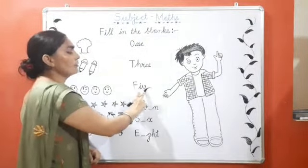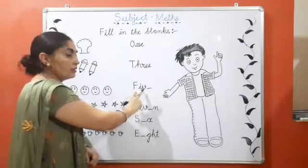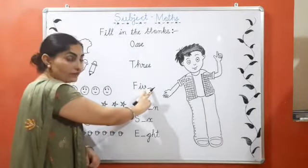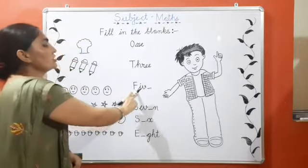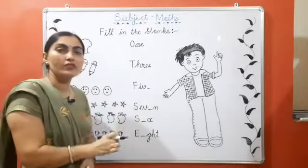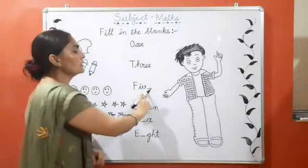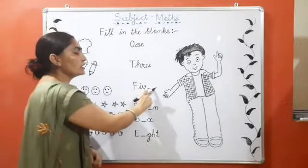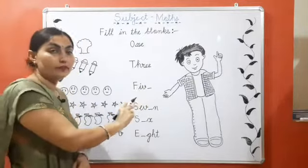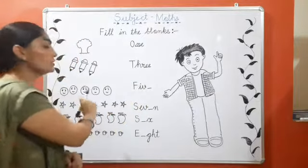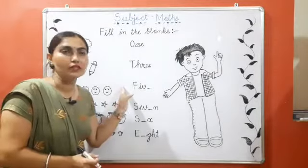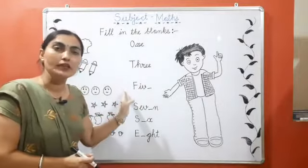Next is F, I, V. E, hai na? Five. Kuch bachy jinko learn na, woh easily samaj jayenge, kye yahaan par humi five ki spelling write karna hai, yahaan par ma'am ne kis ke liye blank chhoda hai. Or kuch bachy jinko samaj na hai, beta, woh objects ko count karke samaj lena, kye yih kis number ka name hai.